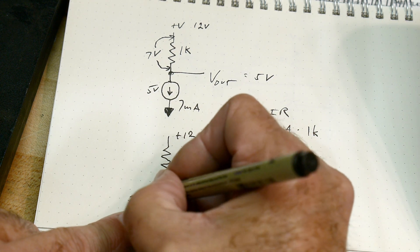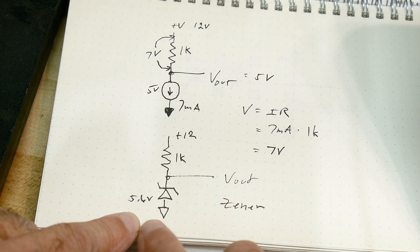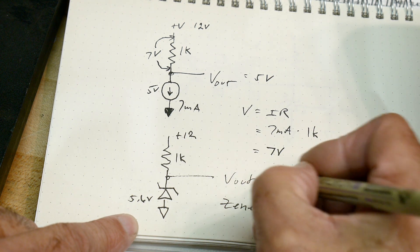Let's say that we have a 5.6 volt zener. That's a pretty common voltage zener. 5.6 volts. So what's the V out? Well, it's 5.6.